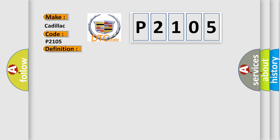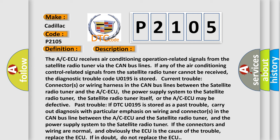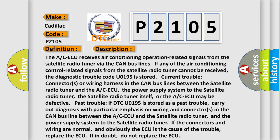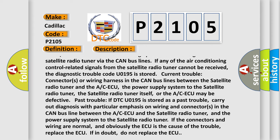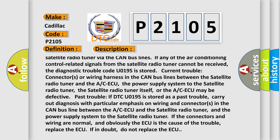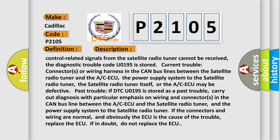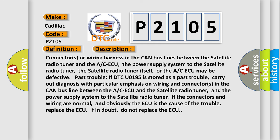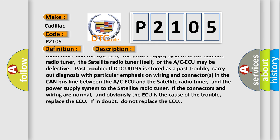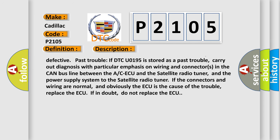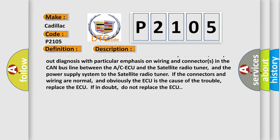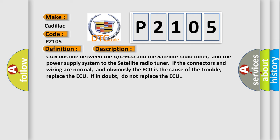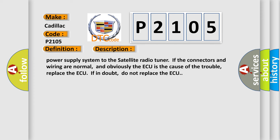The ACAQ receives air conditioning operation related signals from the satellite radio tuner via the CAN bus lines. If any of the air conditioning control related signals from the satellite radio tuner cannot be received, the diagnostic trouble code U0195 is stored. Current trouble connectors or wiring harness in the CAN bus lines between the satellite radio tuner and the ACAQ, as well as the power supply system to the satellite radio tuner, may be defective.